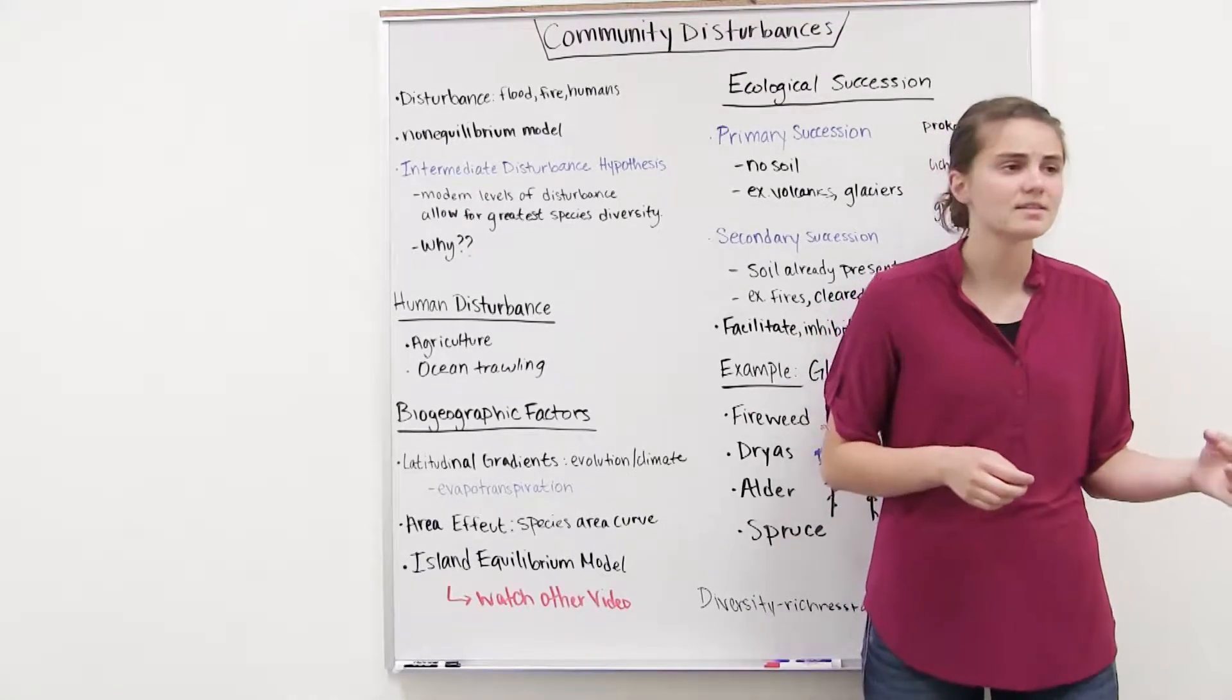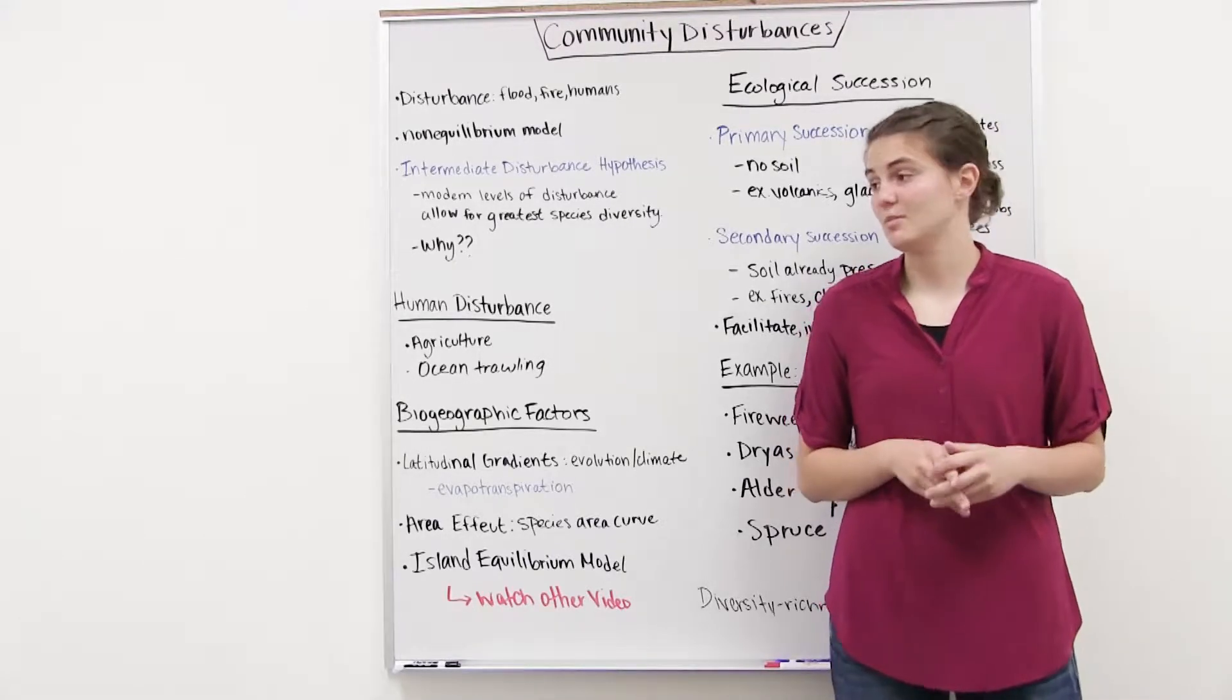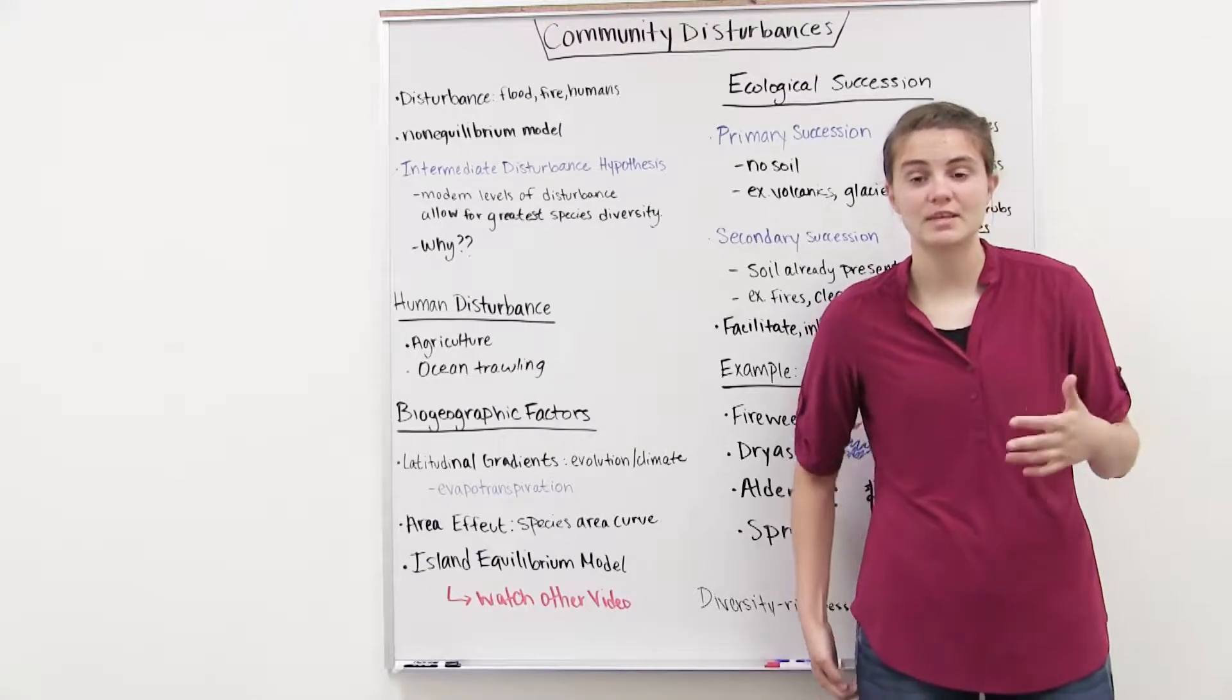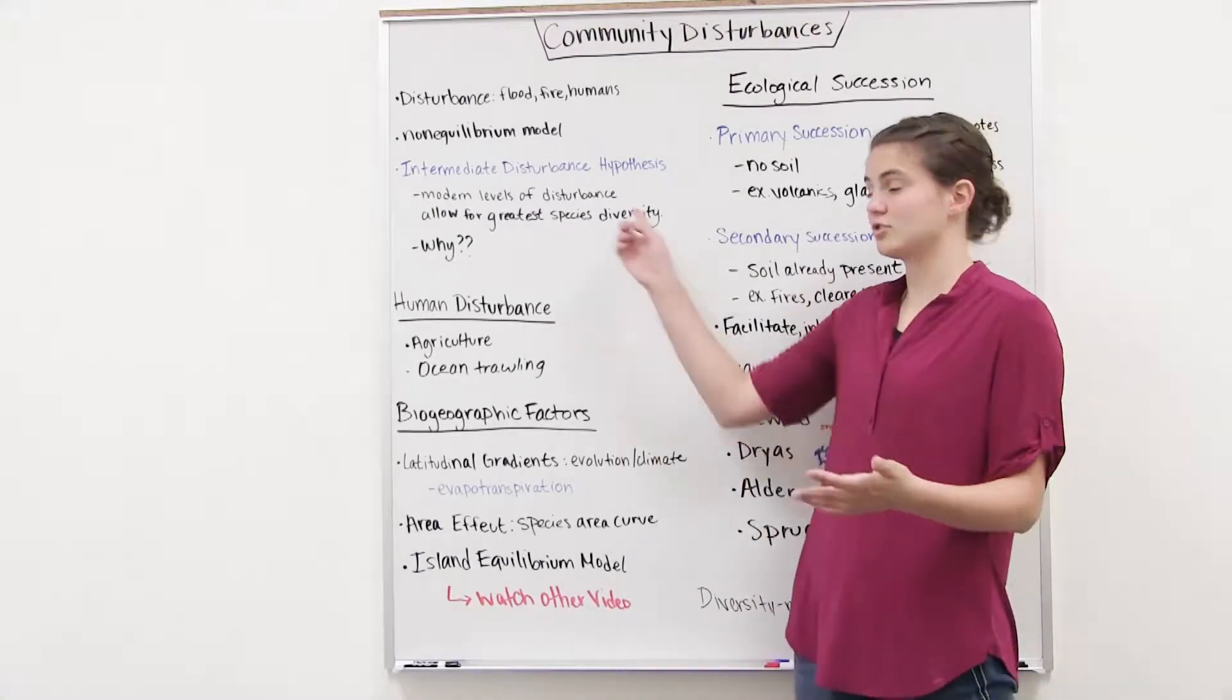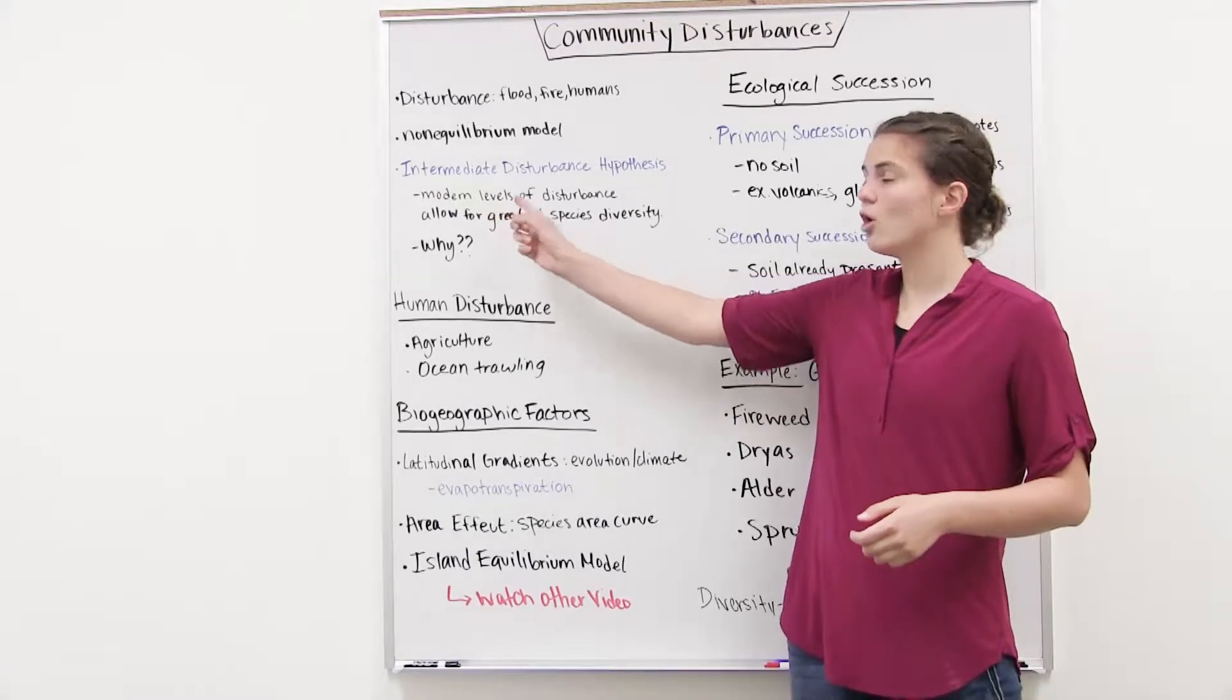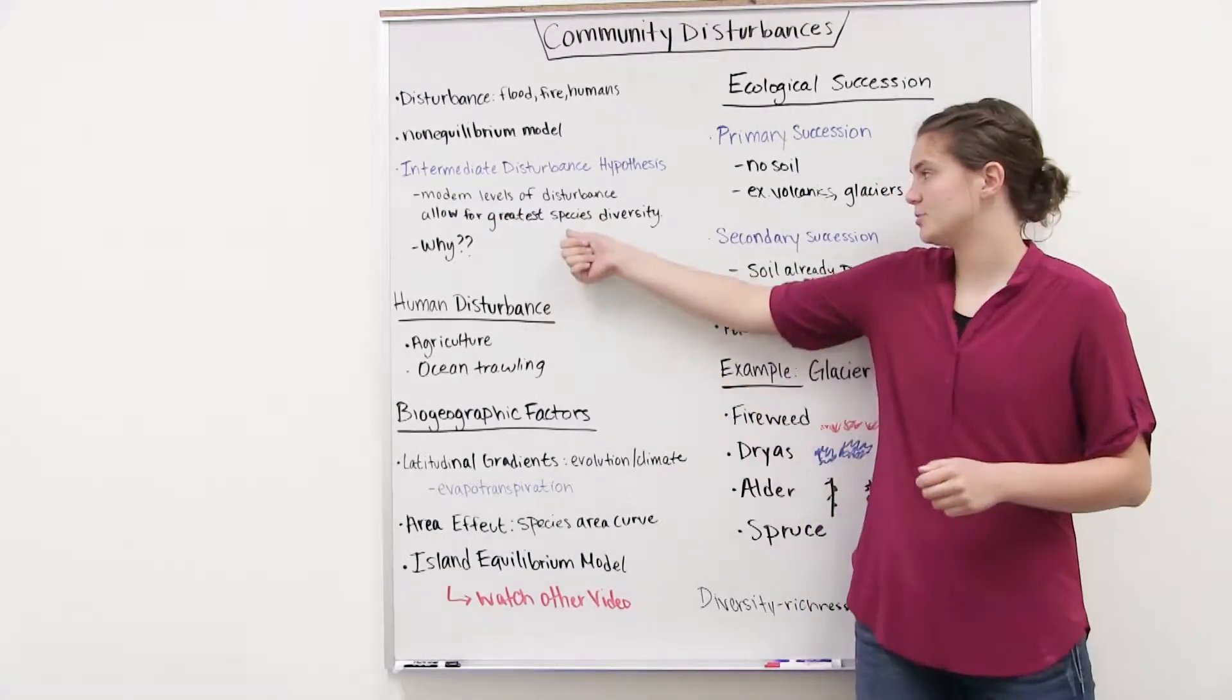Because logically it makes sense that if you have high disturbance, then it's going to affect species diversity because you're going to be killing off a lot of the species because they won't be able to handle the stress of this environment. And so you'd expect with high levels of disturbance that we'd have lower species diversity. But why with low levels of disturbance, we also not have this great species diversity?